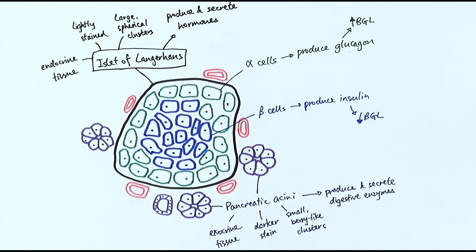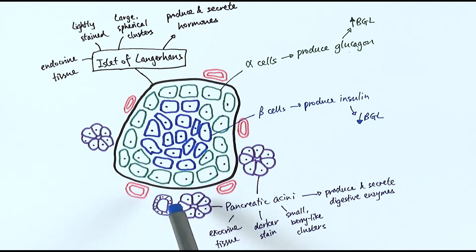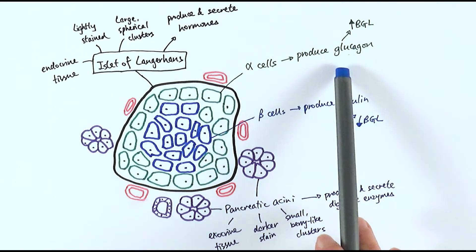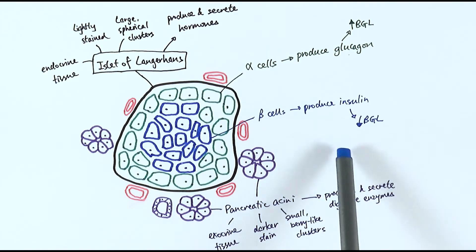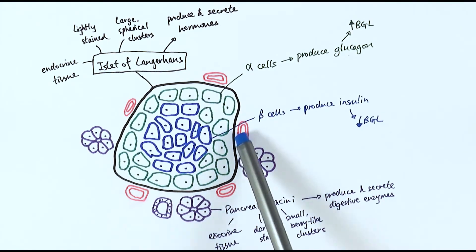To summarize: the pancreas is an organ that can release digestive enzymes as exocrine tissue, because it has the pancreatic acini that appear as small barrel-like clusters with a slightly darker stain. Enzymes they produce go into the pancreatic duct and then to the small intestine for digestive purposes. The islets of Langerhans are endocrine tissue that produce and secrete hormones and usually appear as large spherical clusters that are lightly stained. Within the islets of Langerhans, alpha cells produce glucagon to increase blood glucose level, and beta cells produce insulin to decrease blood glucose level. Once these hormones are produced they go into the capillaries to travel to target cells to regulate blood glucose level.